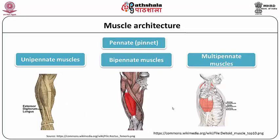In the pennate type, the example of a unipennate muscle is extensor digitorum longus of the leg. A bipennate muscle example is rectus femoris. A multipennate muscle example is the deltoid muscle, because in the deltoid there are three parts — anterior deltoid, posterior deltoid, and middle deltoid — and in all three the direction of the muscle fibers differs, which is why it is called a multipennate muscle.